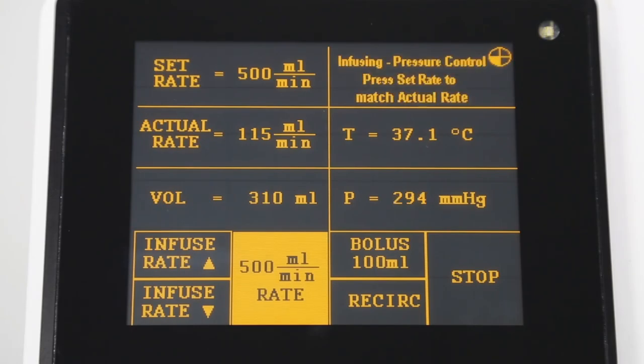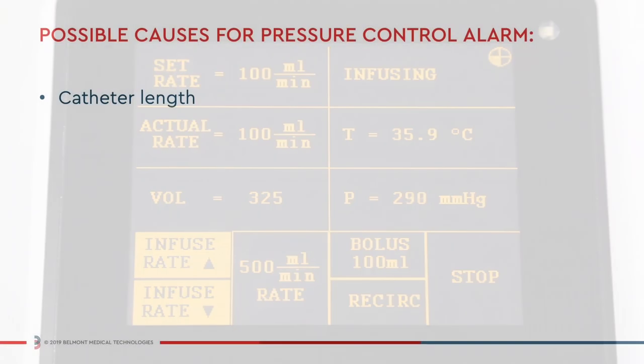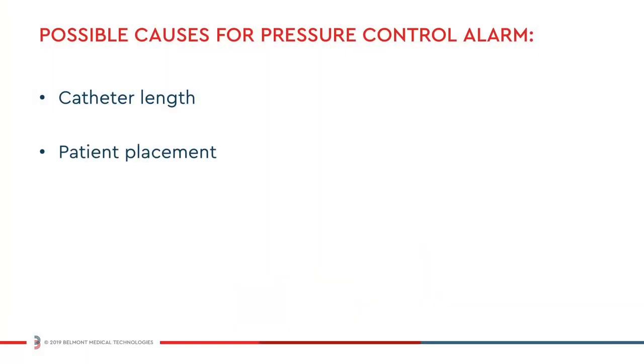Pressure control will display when the set rate is higher than the maximum allowable infusion rate. Infusion will continue during the pressure control alert, but will be automatically regulated within safe limits. To silence the alarm, press the set rate to match the actual rate. Catheter length, patient placement, and non-high flow valves, caps, or extensions may all reduce the maximum achievable infusion rate.